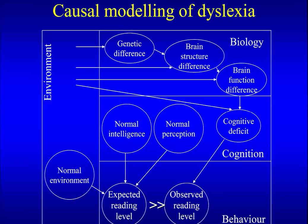The level closest to the behavioral level is the cognitive level, where we talk about all information processes in the brain that generate behavior, thought, and language. To understand why a child fails to acquire reading properly, we may hypothesize that the child has some deficits at the cognitive level. This is a hypothesis, and we carry out experiments to test it. If we find evidence for a cognitive deficit in dyslexia, we then look for its cause in the brain.